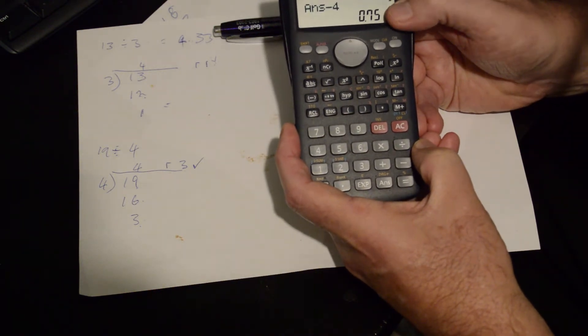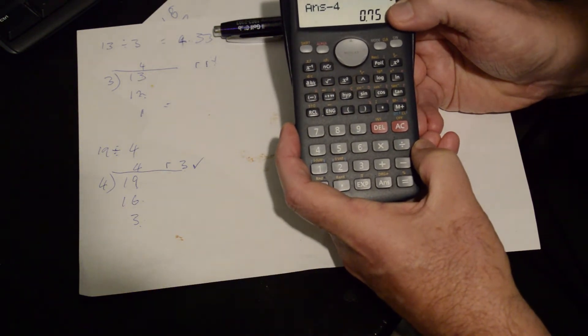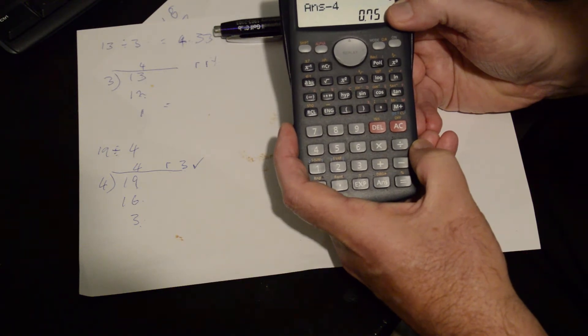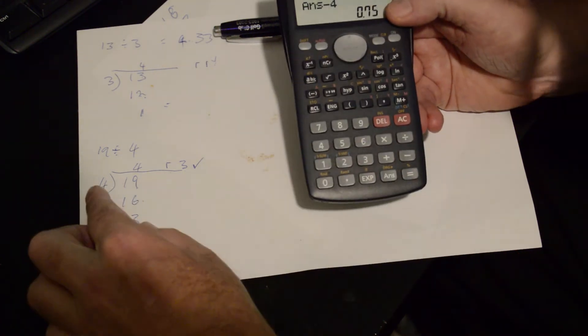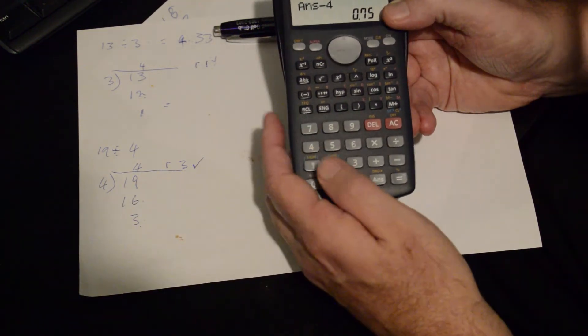So now we need to change that 0.75 into a remainder. To do that, we've divided by 4, we need to multiply by 4.